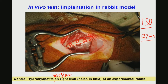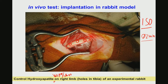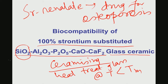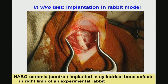The use of the control implant is to make sure that you implant it in the same animal itself, so that you can compare the osseointegration behavior of a material already proven to be biocompatible with that of the test implant. In the present case, the test implant is the 100% strontium substituted silica alumina phosphate glass ceramic, and the control implant is the hydroxyapatite bioglass material.